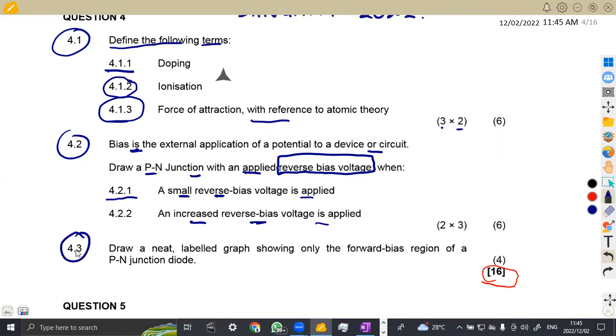The 4.3 part is to draw, take note, draw a neat labeled graph. This is a graph that is to show only the forward bias region of a P-N junction diode. We know that for the diodes that we have, we can have germanium, we can have silicon, whereby the germanium is at 0.3 volts where it's going to start and silicon at 0.6 up to 0.7 volts where it is going to start. So you're going to choose between either germanium or silicon.